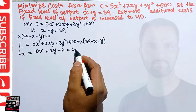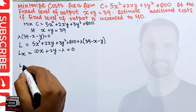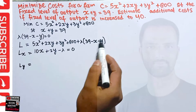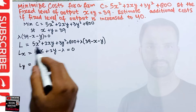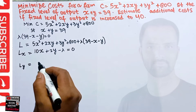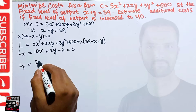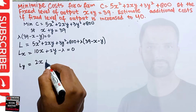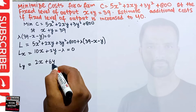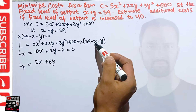Similarly, we take the derivative with respect to y and set it equal to zero. The first term has no y, so its derivative is zero. In the second term 2xy, the derivative of y is 1, giving 2x. The third term 3y² gives 6y. The derivative of −y with respect to y gives −λ. So the second equation is: 2x + 6y − λ = 0.